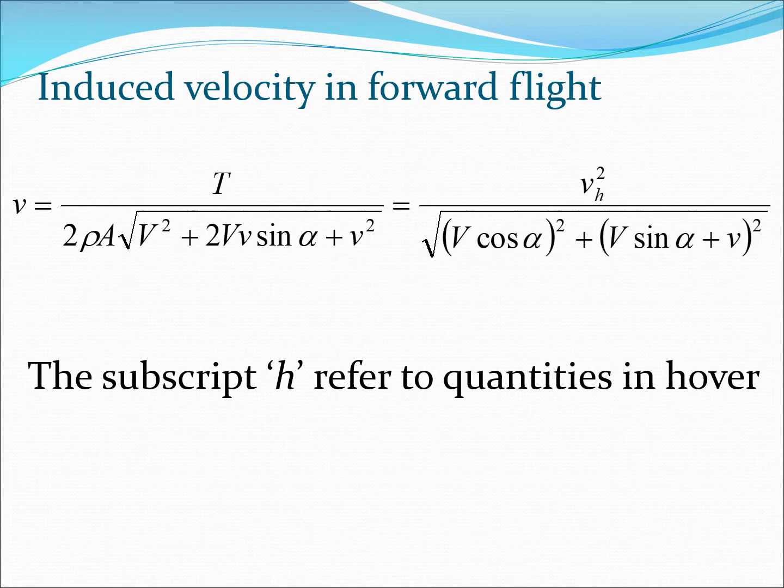In the previous lecture, I derived this expression for velocity, the induced velocity in terms of the rotor thrust, the forward speed, density of air, rotor cross-section, and the angle which the velocity makes. We saw that this equation has v on both sides. So, let's try to simplify this equation and put it in a non-dimensional form.